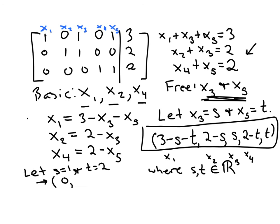2 minus s, so that would be 2 minus 1. x3 is just s, so that would be 1. x4 is equal to 2 minus t, so that would be 0. And x5 is just equal to t, which is 2.